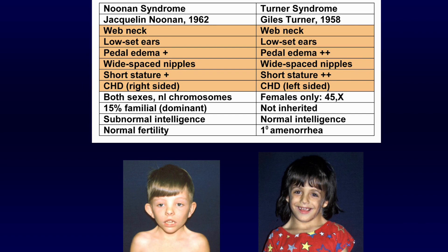Congenital heart disease is shared by both syndromes. Special mention: in Noonan syndrome the congenital heart disease is pulmonary stenosis, and in Turner syndrome the special mentions are bicuspid aortic valve and coarctation of the aorta.